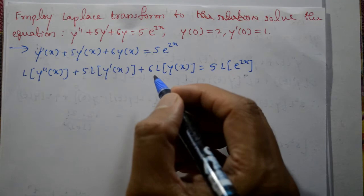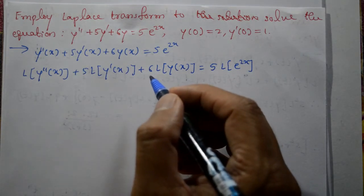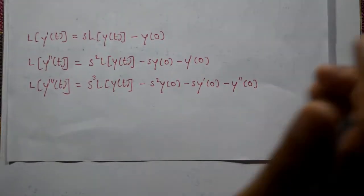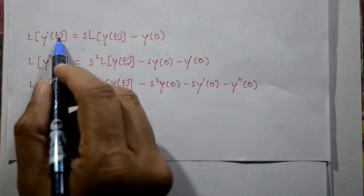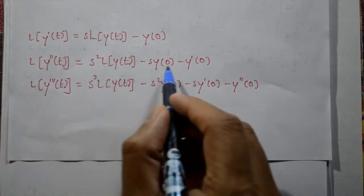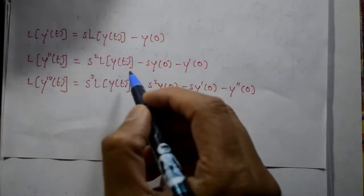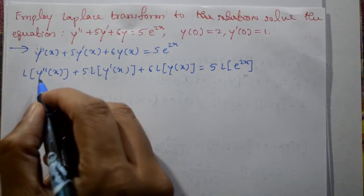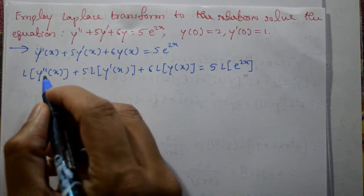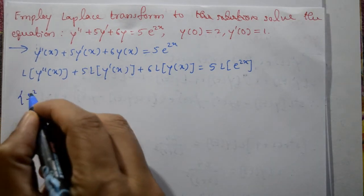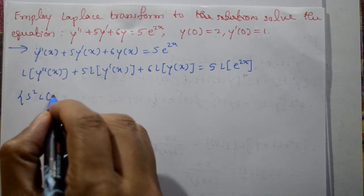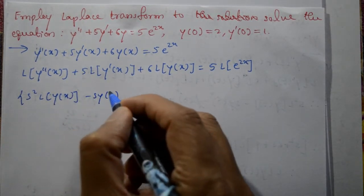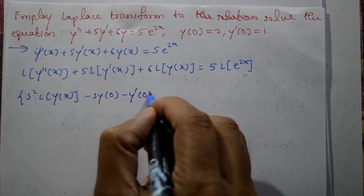For this term we use Laplace transform of derivative formula. Laplace of y dash of t and Laplace of y double dash of t formulas are the derivative formulas. Now, so Laplace of y double dash of x you can write like this: s square Laplace of y of x minus s y of 0 minus y dash of 0.